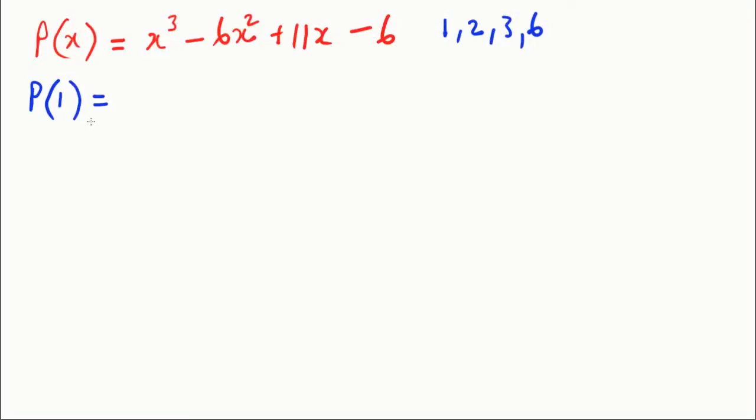And subbing that in you would get one minus 6 plus 11 minus 6 and all of that is 12 minus 12 which equals 0.